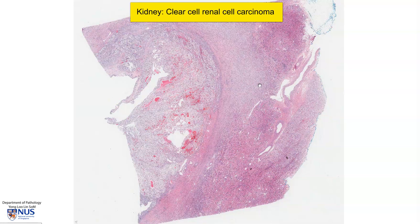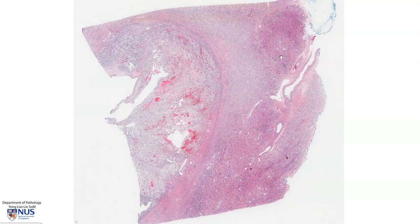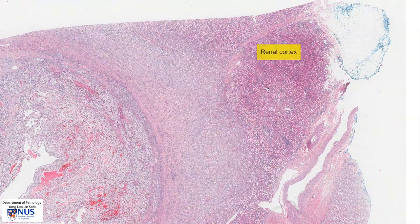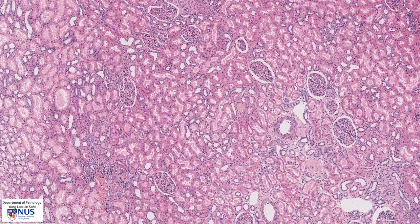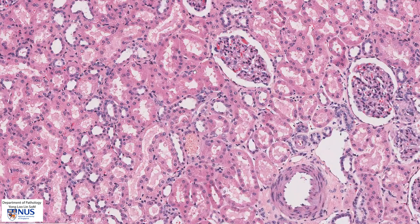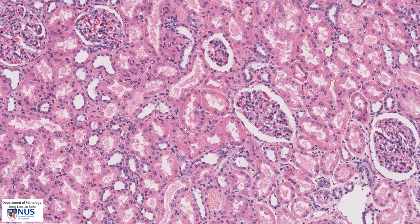Before we look at the tumor itself, which is located here, let's take a look at the non-neoplastic kidney. This is the renal cortex, and this is the medulla. In the cortex, we can see glomeruli and we can see some tubules, and these are parts of the proximal convoluted tubule. These are usually lined by cells with abundant dense eosinophilic or pink cytoplasm.